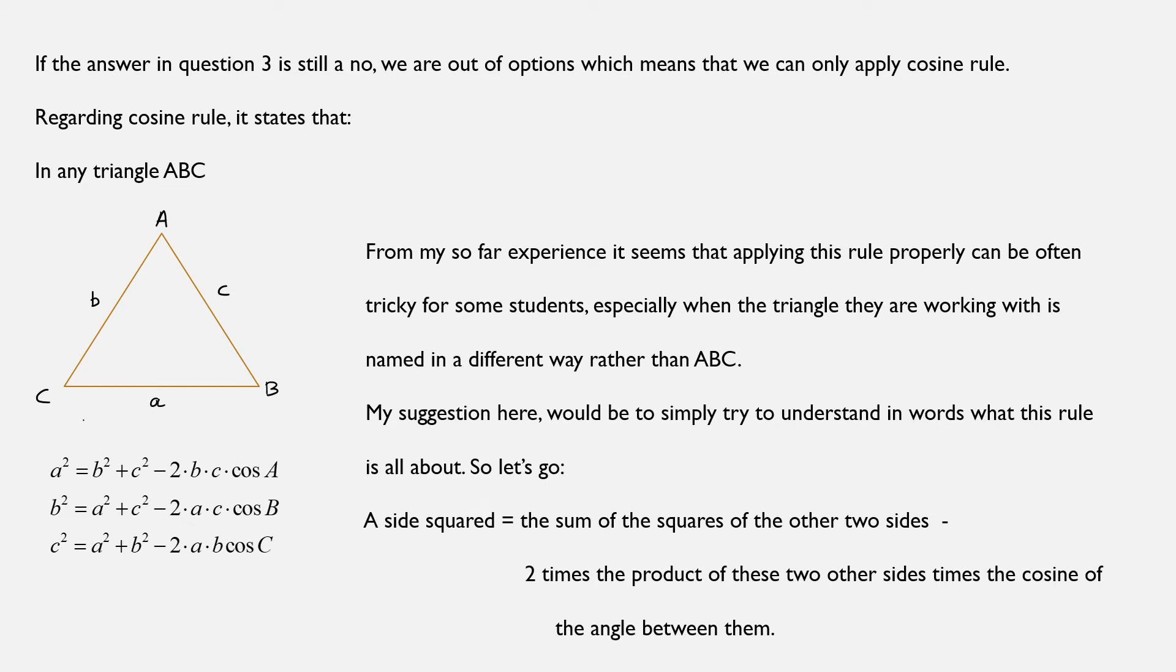Regarding now cosine rule, it states that in any triangle ABC, where ABC capital are the vertices of the triangle and abc small case letters are denoted as the opposite sides respectively, we have that a squared equals b squared plus c squared minus 2bc cosine A.